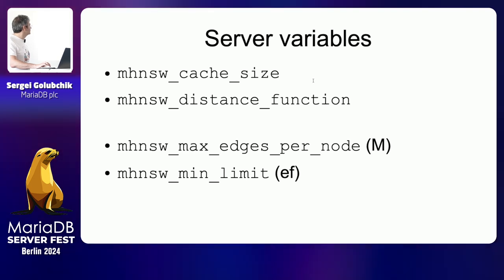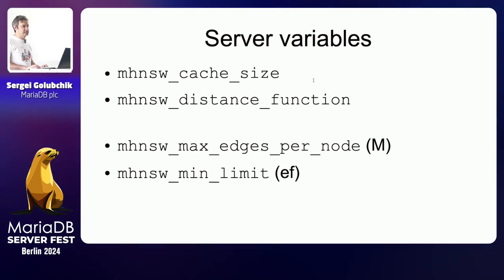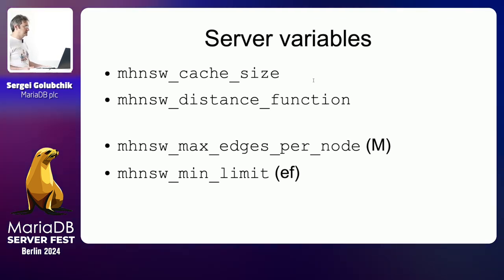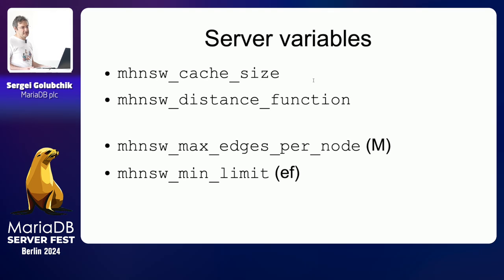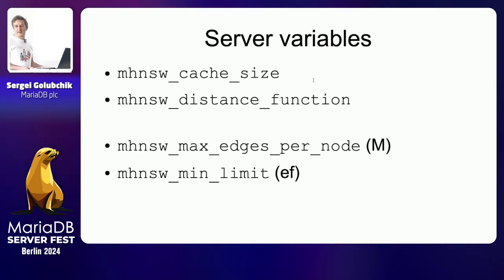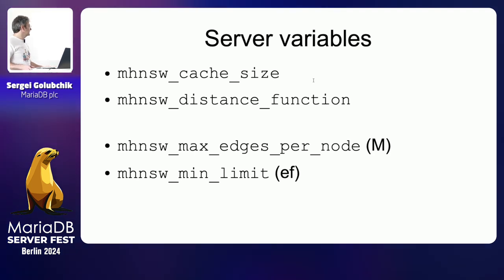The HNSW algorithm — Hierarchical Navigable Small Worlds — that we implement is an in-memory algorithm, meaning the whole index is supposed to be loaded in memory. The cache size should ideally be big enough for the whole index to fit in memory; if not, it will be loading from the table constantly and will be much slower. Thanks to compact representation, about a billion floating point numbers fit into 3.5 gigabytes — I've never gone over four gigabytes of memory even with larger datasets.